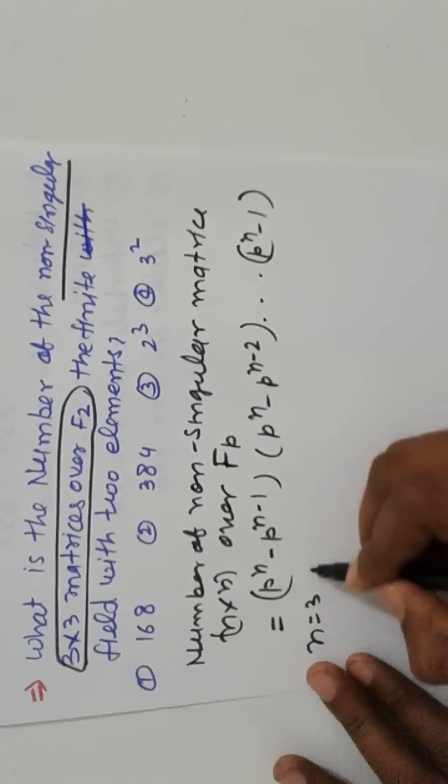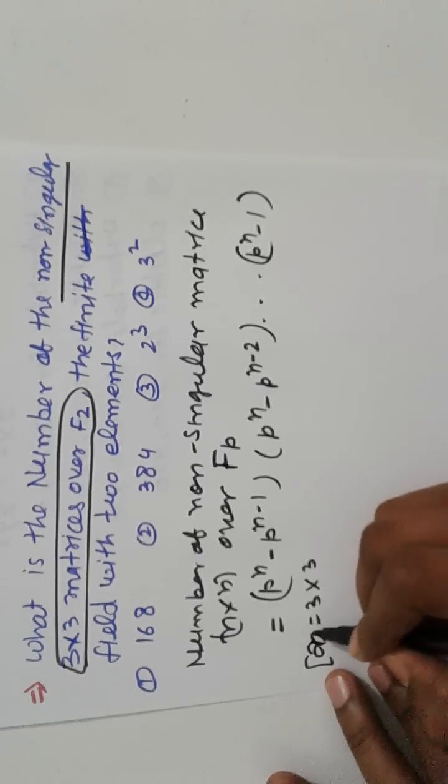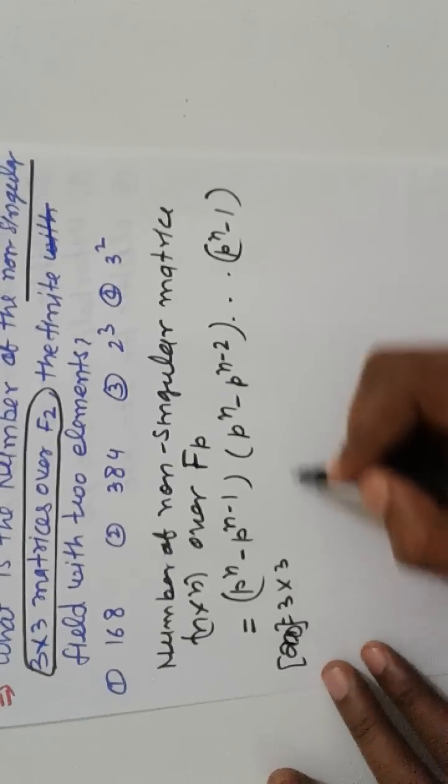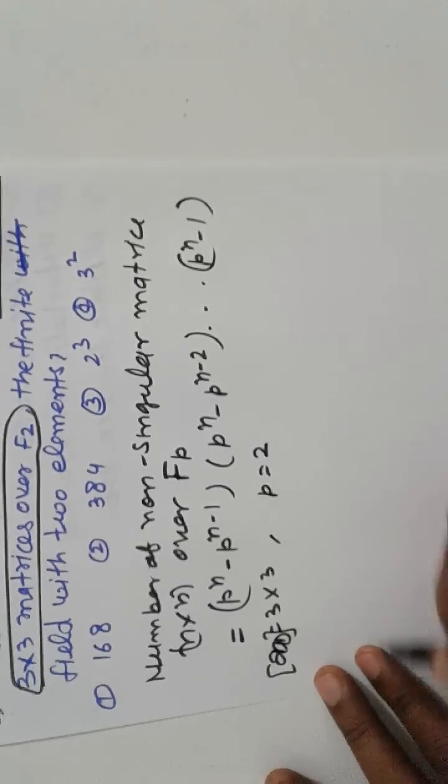So here n is equal to 3 cross 3 matrices over here. Aij is 3 cross 3. So p raised to n minus 2 and p equal to 2.